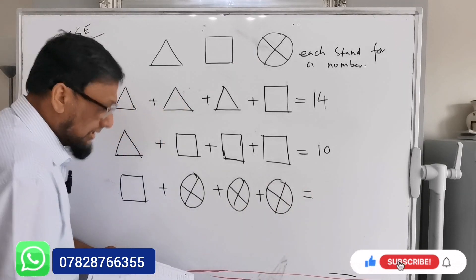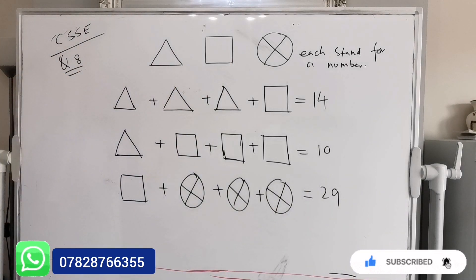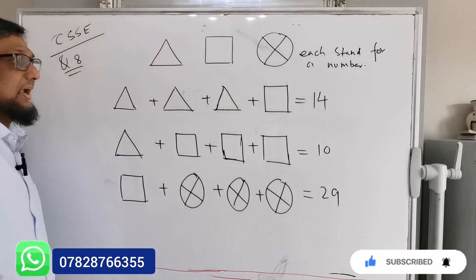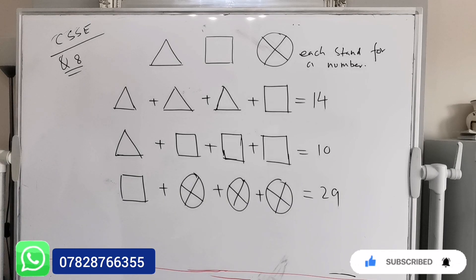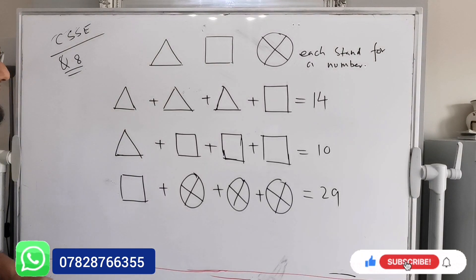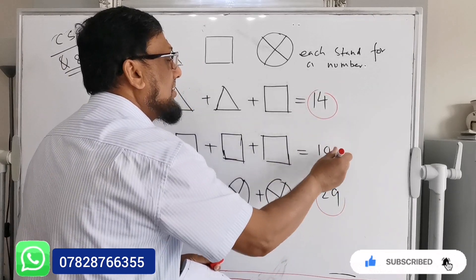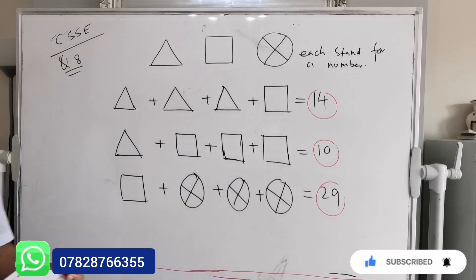Equals 29. So always remember whenever these types of questions come in the exam, you can try the lowest one. It's easy to figure out the lowest sum. The lowest sum is 10.